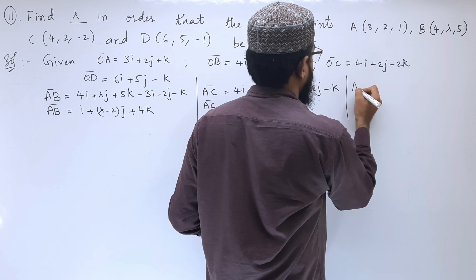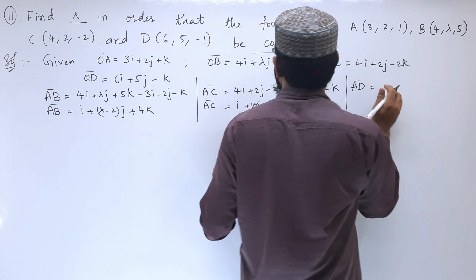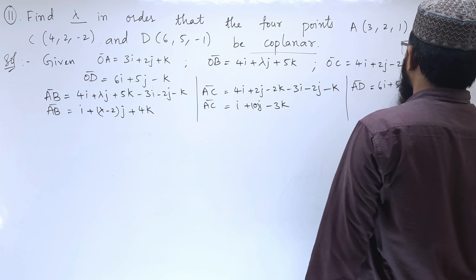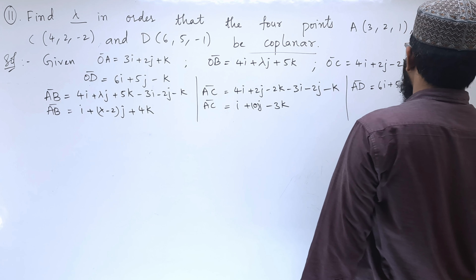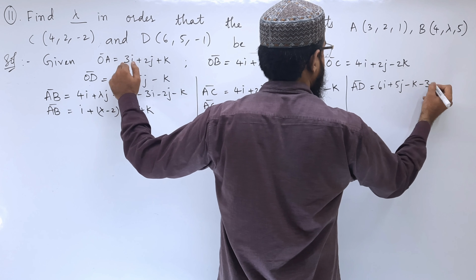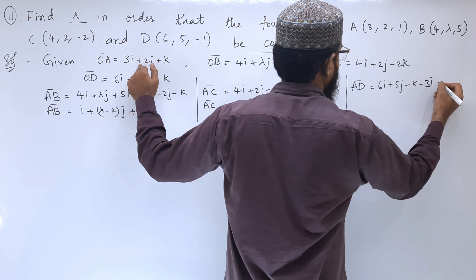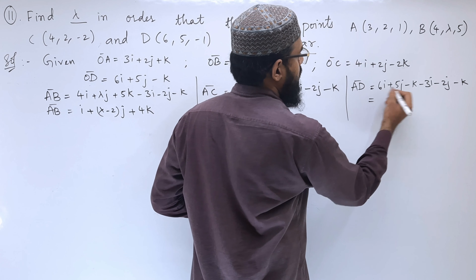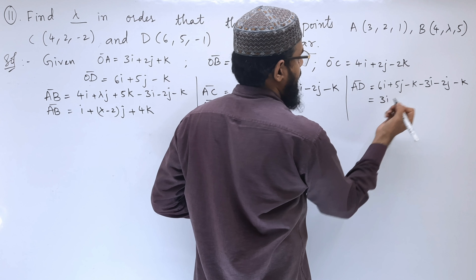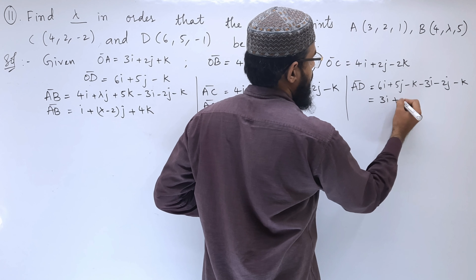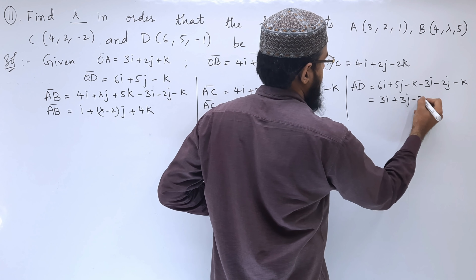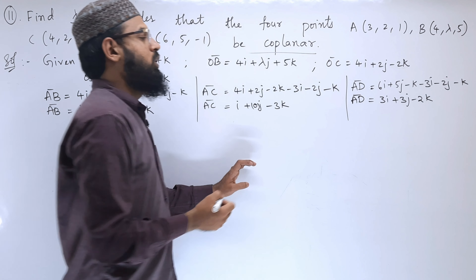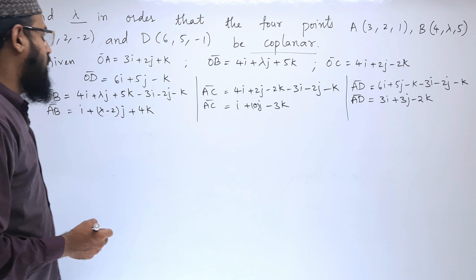Next is AD. So AD = OD - OA = (6i + 5j - k) - (3i + 2j + k), so 6i - 3i = 3i, 5j - 2j = 3j, and -k - k = -2k. So vector AD = 3i + 3j - 2k.